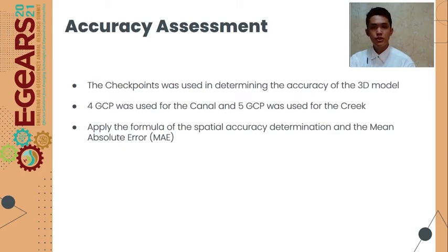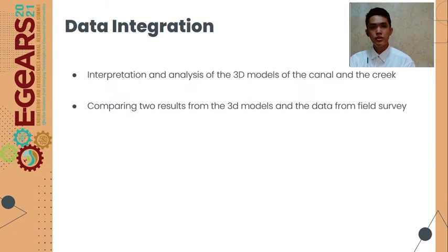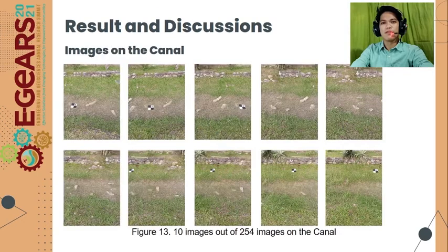On the canal, 4 GCPs were used as checkpoints. On the creek, 5 GCPs were used as checkpoints. Applying the formula for spatial accuracy determination and mean absolute error, we determined the error and accuracy of the 3D model. The purpose of data integration was to interpret and analyze the 3D model by comparing the two results from the 3D model and the data from the field survey.